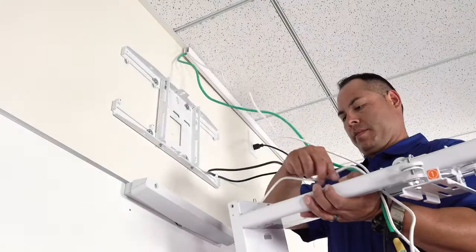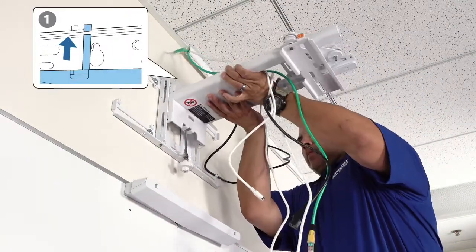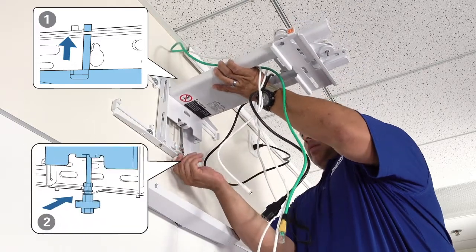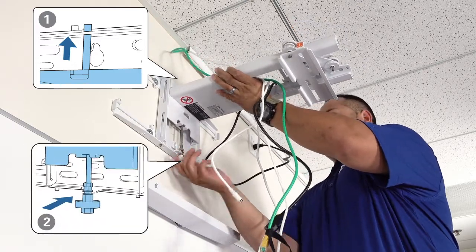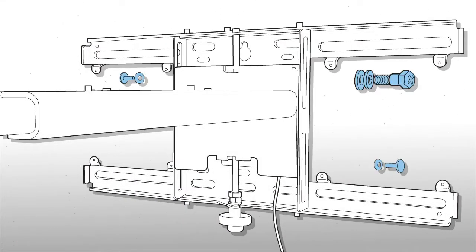Attach the mount arm to the wall plate. Insert the adjustment screw through the hole at the top of the wall plate, then slide the screw into the notch at the bottom of the wall plate. Use the included screws and washers to secure the arm to the wall plate.